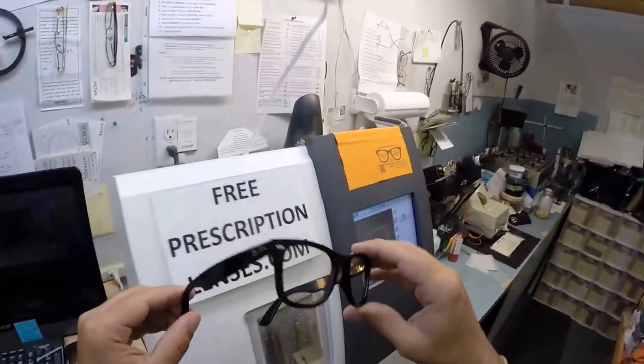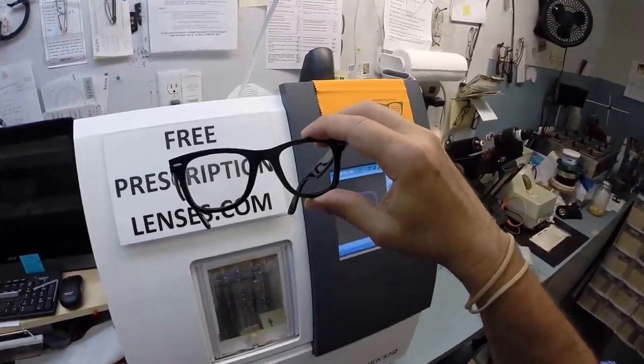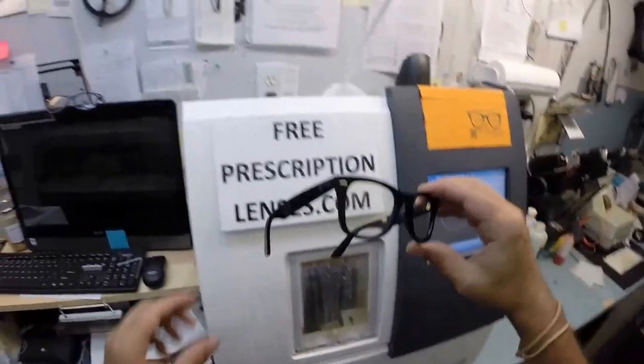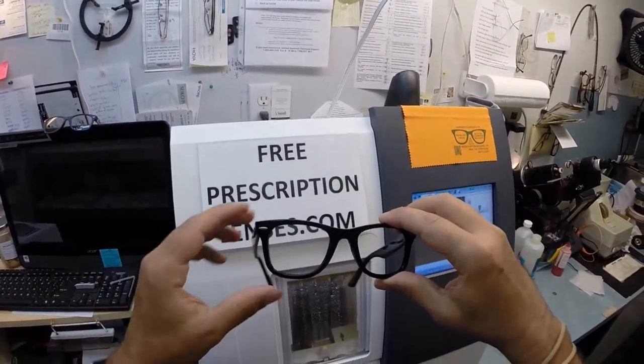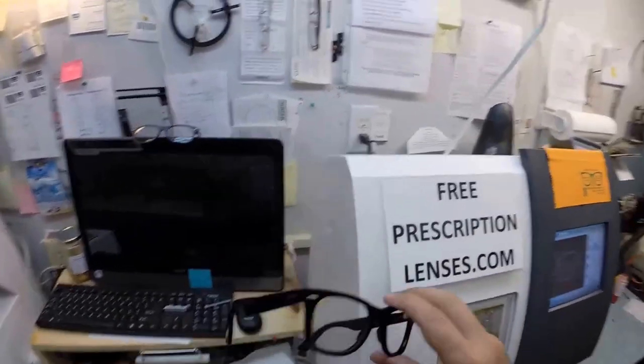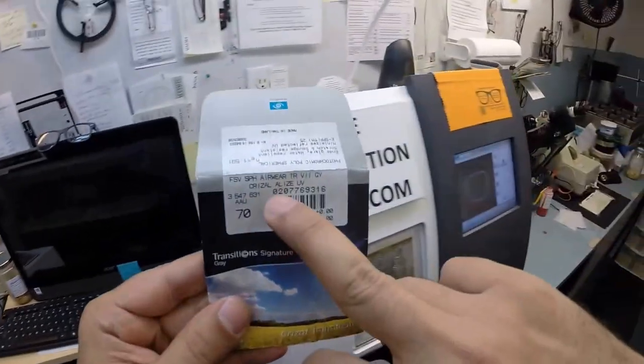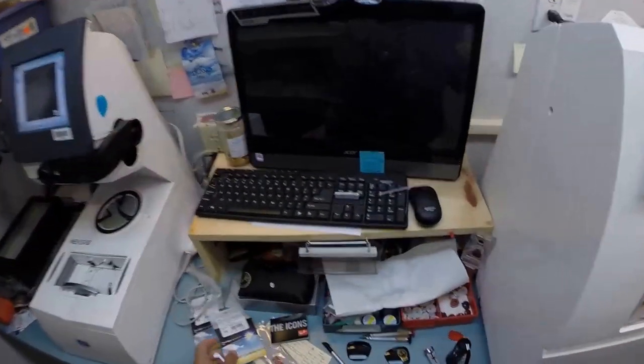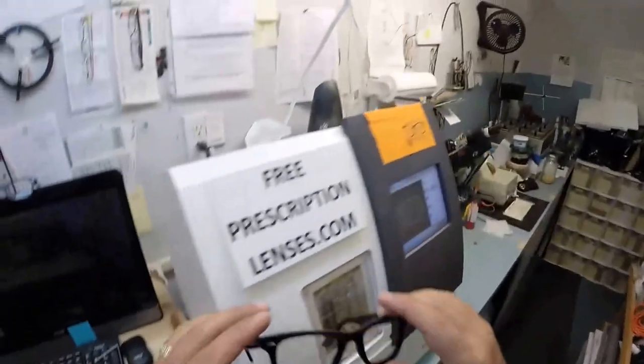This frame sells for $155. You get clear lenses for free or prescription lenses for free simply by buying the frame from me. You pay $50 to upgrade to Transitions and $40 to upgrade to Crizal, so it is $245 total.